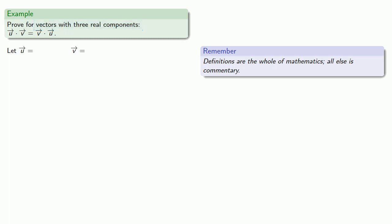Well, what does that mean that our vector has three components? Well, this means our vector can be written as U1, U2, U3, and V1, V2, V3.